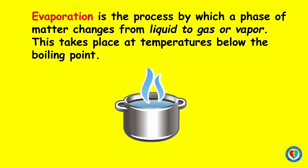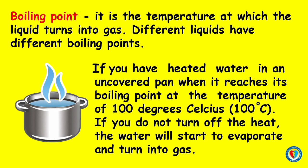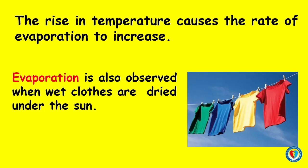Evaporation is the process by which a phase of matter changes from liquid to gas or vapor. This takes place at temperatures below the boiling point. The boiling point is the temperature at which the liquid turns into gas. Different liquids have different boiling points. For example, if you heat water in an uncovered pan, the water spills out of the pan when it reaches its boiling point at 100 degrees Celsius. If you do not turn off the heat, the water will start to evaporate and turn into gas. The rise in temperature causes the rate of evaporation to increase. Evaporation is also observed when wet clothes are dried under the sun.